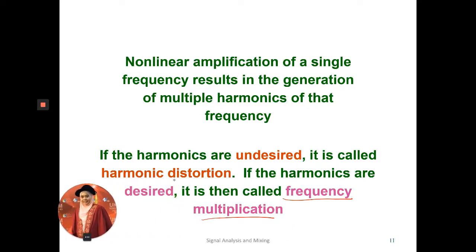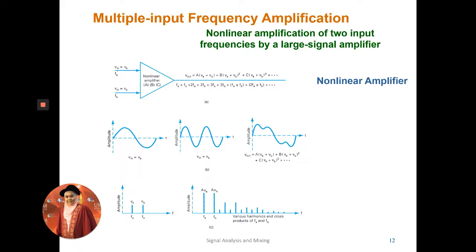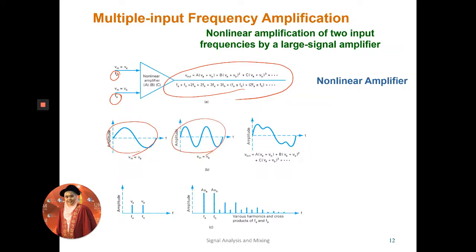When multiple inputs are mixed using a non-linear amplifier, the output becomes very complex. Even with just two input signals A and B, the output contains many more frequency components resulting from the non-linear mixing process. A simple sine wave input becomes a very complex signal at the output, and the spectrum analyzer shows many peaks instead of the original two input frequencies.